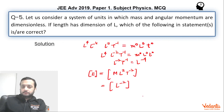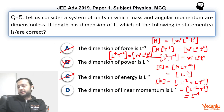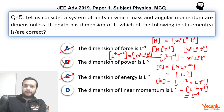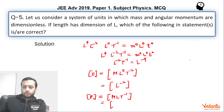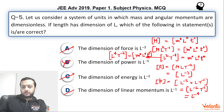For linear momentum, using symbol capital P, it is mass into velocity. Mass is dimensionless, so we ignore it, leaving L·T⁻¹. From the key relation L²·T⁻¹ is dimensionless, taking L to this side, we are left with L·T⁻¹, which corresponds to L⁻¹. So linear momentum has dimension L⁻¹, and option D was also correct.